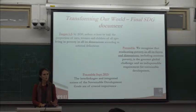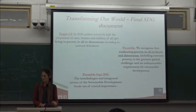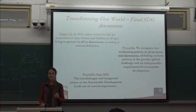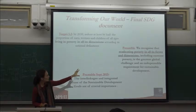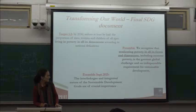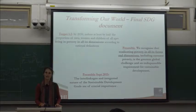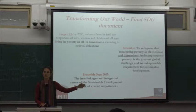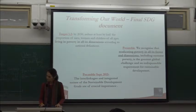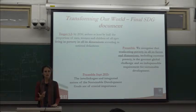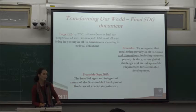In the final document, Target 1.2 was maintained with the same language as the Open Working Group had proposed. The second sentence of the preamble recognizes that eradicating poverty in all its forms and dimensions is the greatest global challenge and an indispensable requirement for sustainable development. Extreme poverty — the $1.25 or $1.90 a day — is mentioned as one aspect, but the overall focus is wider. The multidimensional nature of poverty requires an integrated and multi-sectoral policy response.